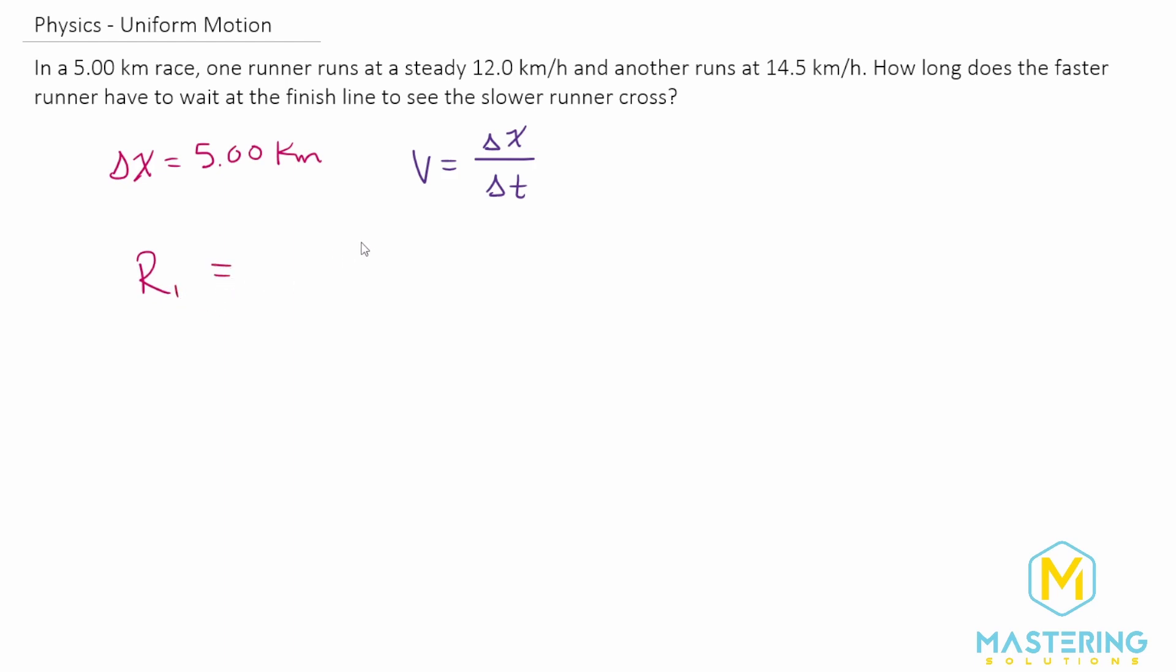So for the faster runner, they went five kilometers. And they ran at a speed of 14.5 kilometers per hour.